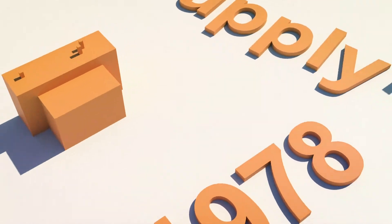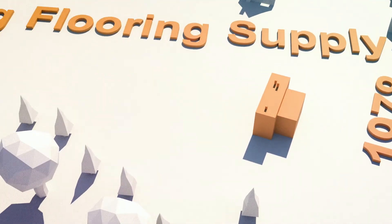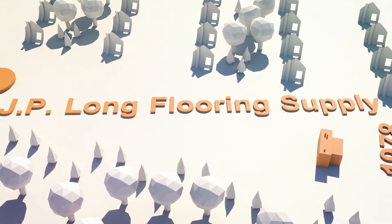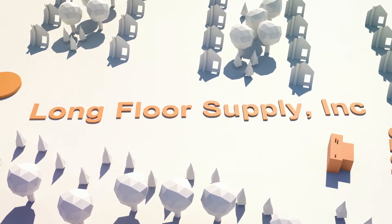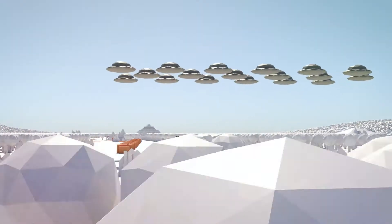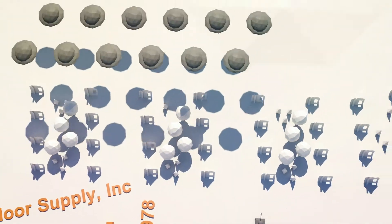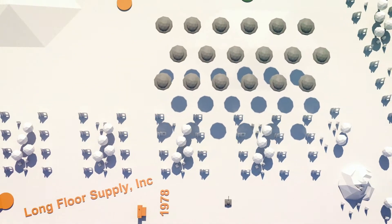Fifteen years later, in 1978, Al Lewis purchases J.P. Long Flooring Supply and changes the name to Long Floor Supply Incorporated. Meanwhile, Earth is under attack by galactic invaders, as the video game classic Space Invaders is released to the public.